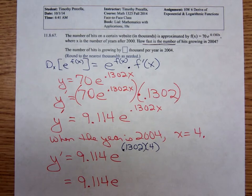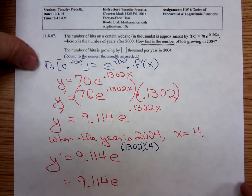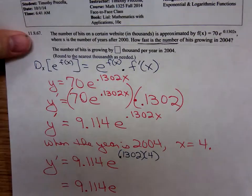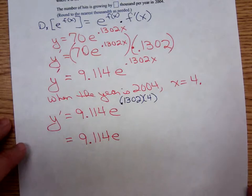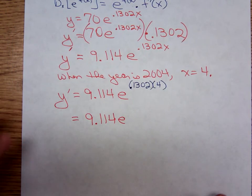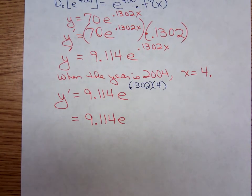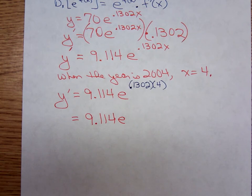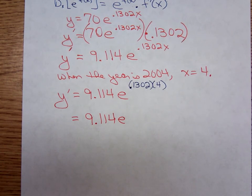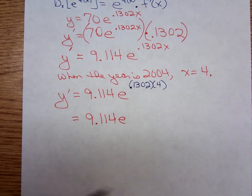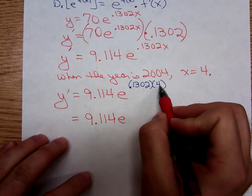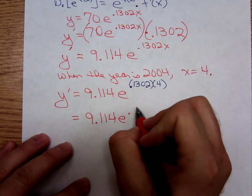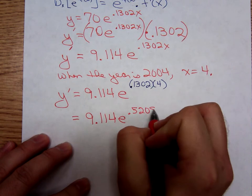So let me move that up a little bit. 0.1302 times 4, 0.1302 times 4 is 0.5208.